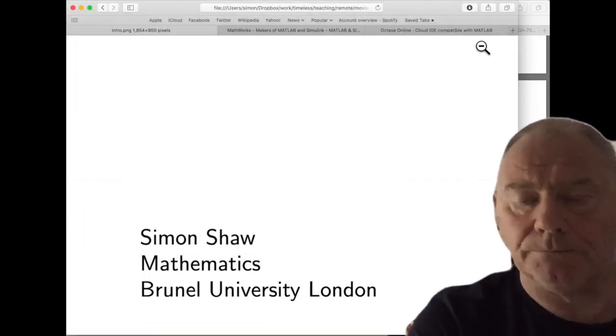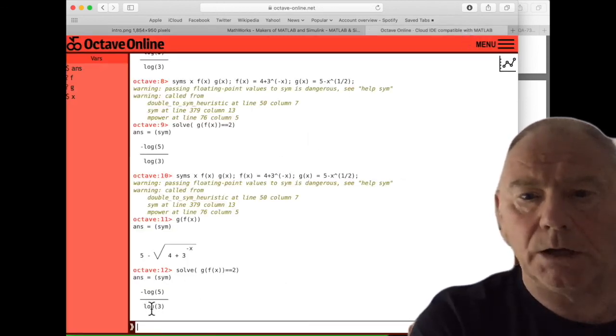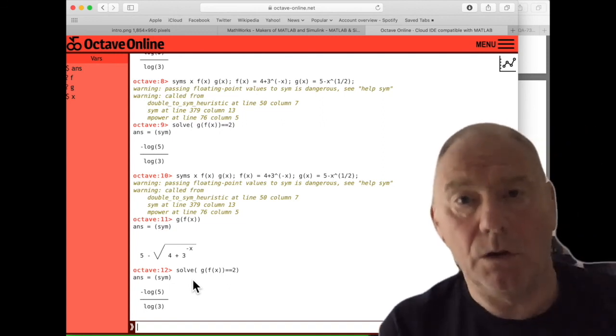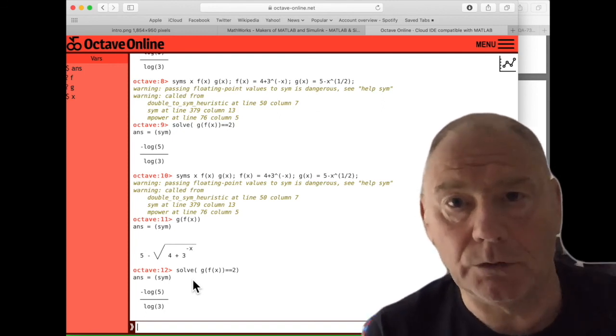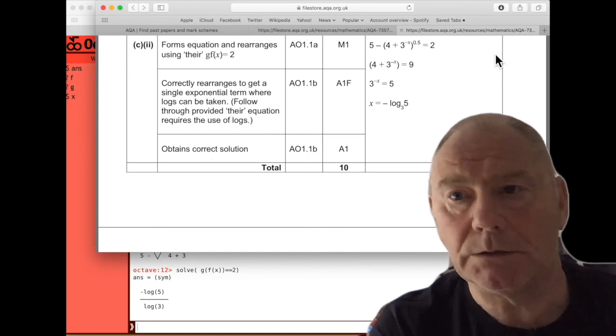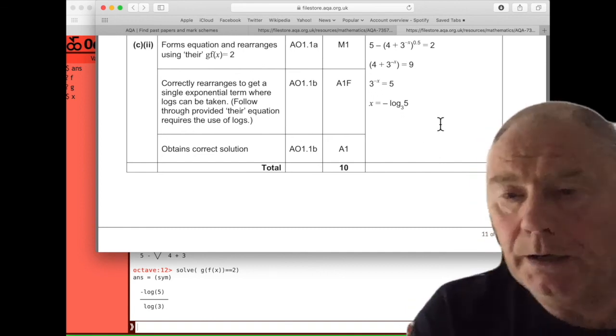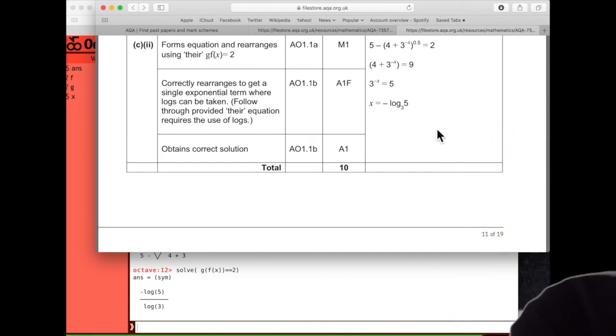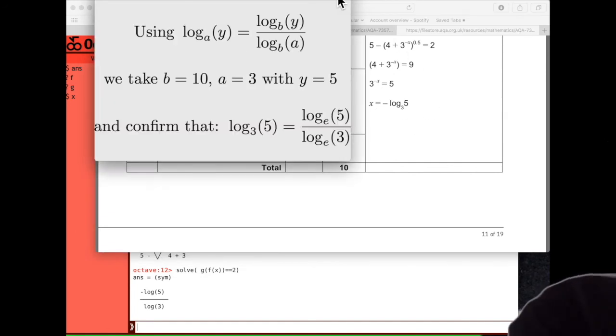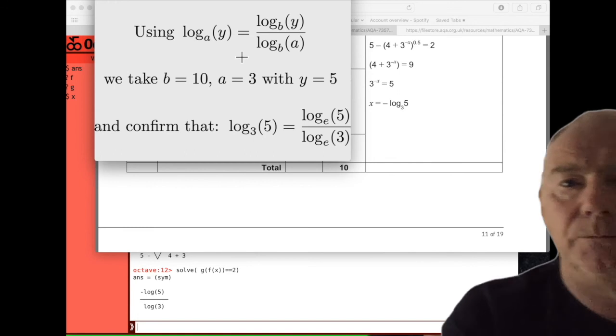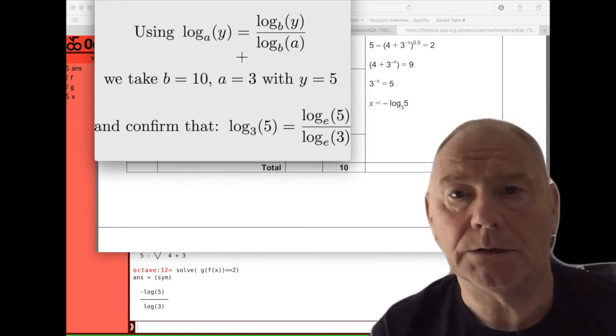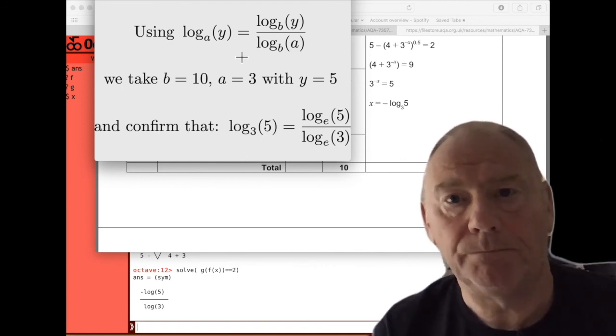If you go through this, you should get an answer like this. Minus log 5 over log 3. And in Octave, log means log to base E, the natural logarithm. Let's look at the answer. The answer given has a log to base 3. So here is my last hint for you. This is how you convert logs to base A to logs to base B. So that's it from me. I wish you good luck. Thank you for listening to me.